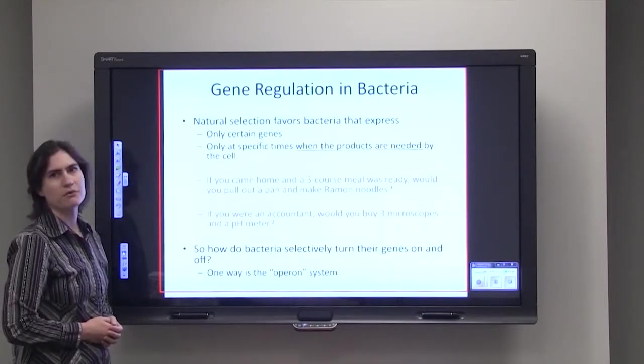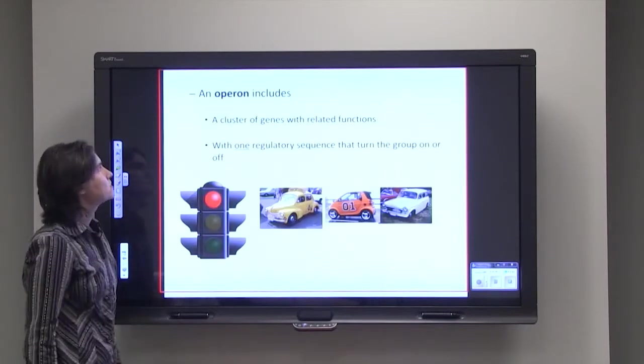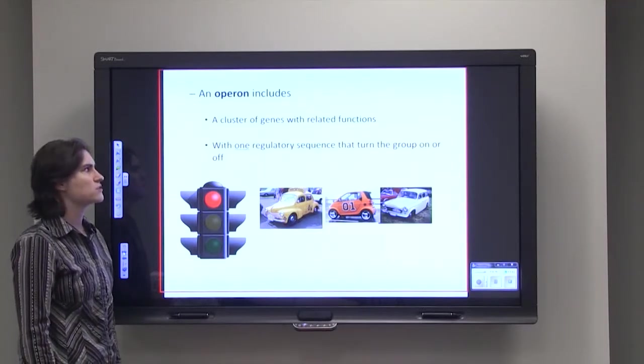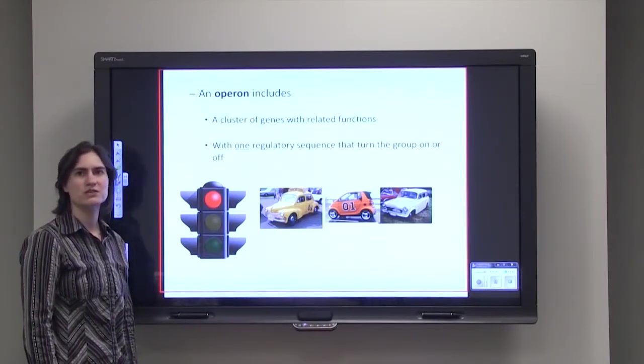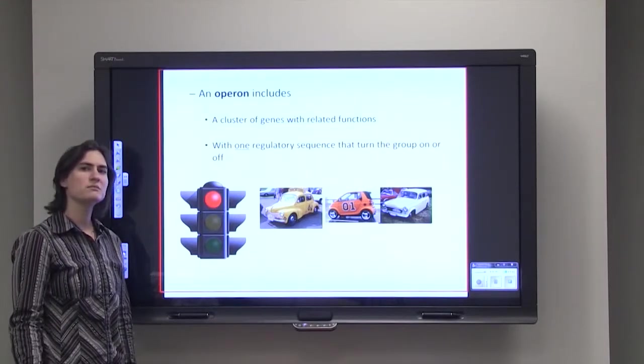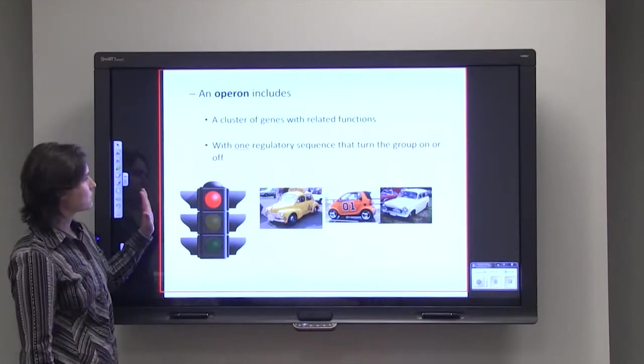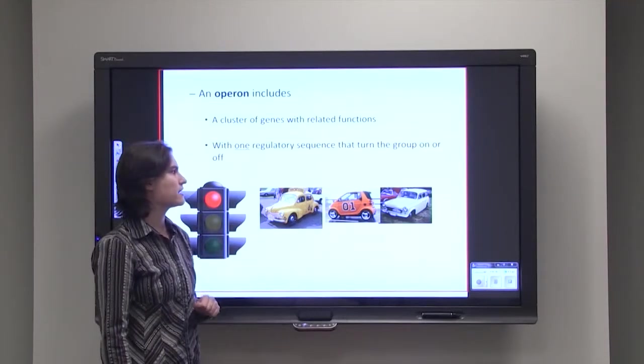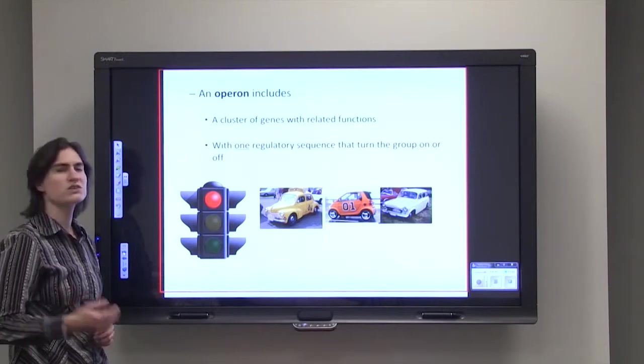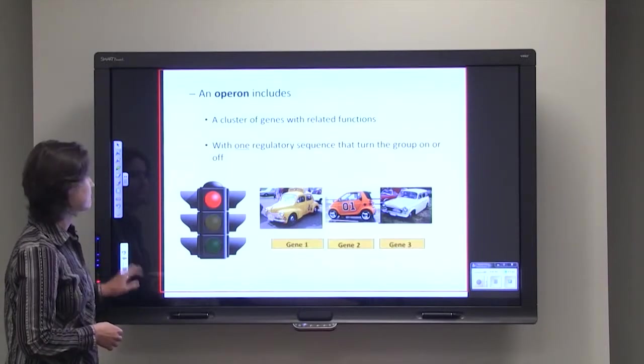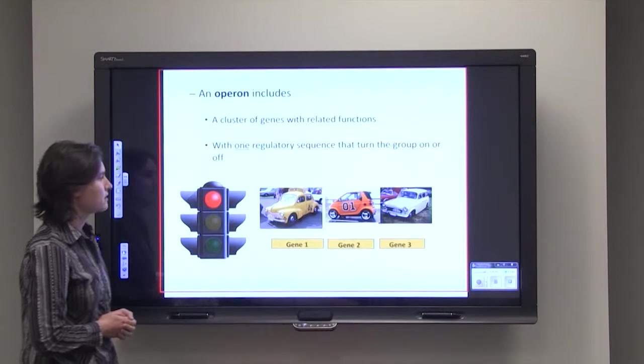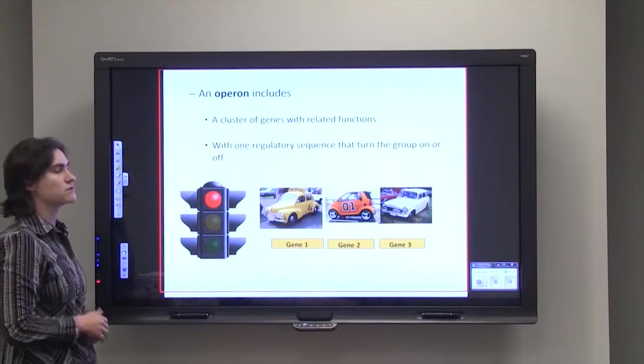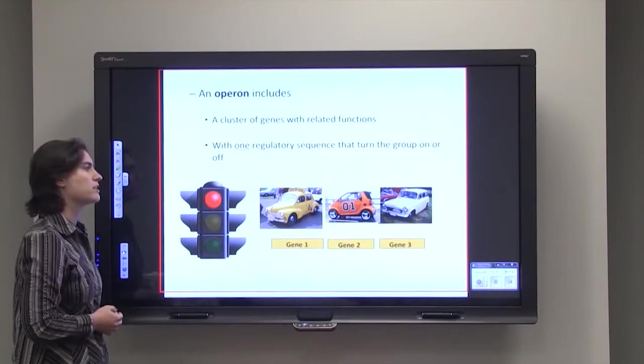One way is by using the operon system. An operon includes a cluster of genes with related functions, and they have one regulatory sequence that turns the entire group on or turns the entire group off. It's a little bit like a traffic light. The traffic light can turn red, yellow, and green, and depending on what color that light is, you can have a series of cars in line that are either allowed to go when it's green or stop when it's red. Same exact thing with an operon. We've got gene one, gene two, and gene three, and they have a regulatory sequence that tells them to be either completely on or completely off.